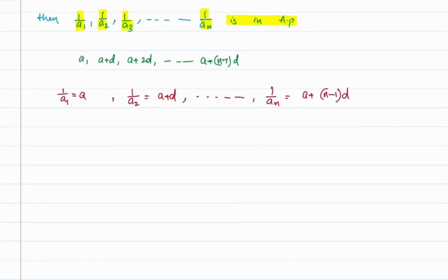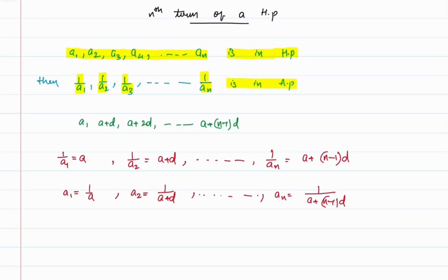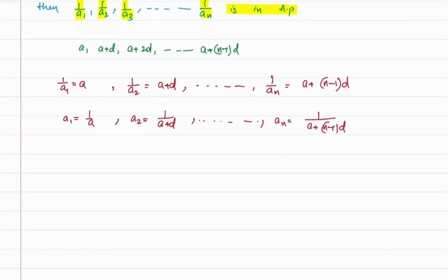Now when we take the reciprocal of these, then we will have a1 = 1/a, a2 = 1/(a+d), and so on up to an = 1/(a+(n−1)d). Here we note that an is the nth term of the HP, and we found that an = 1/(a+(n−1)d).